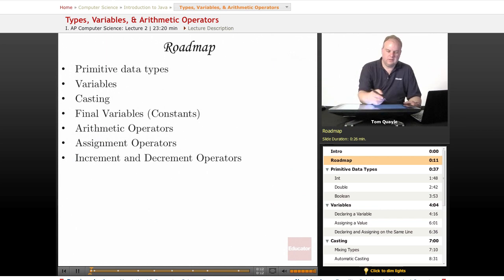In this lesson, we'll first talk about primitive data types, which are built-in data types. We'll talk about variables, and then casting, and then something known as final variables, which is how Java implements constants.